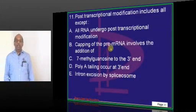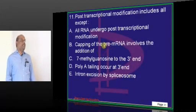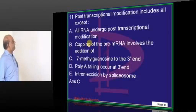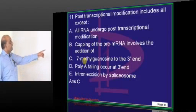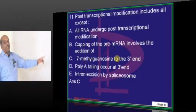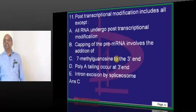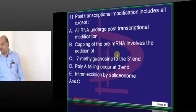Regarding post-translational modifications: 7-methylguanosine capping is towards the 5' end of the pre-mRNA.